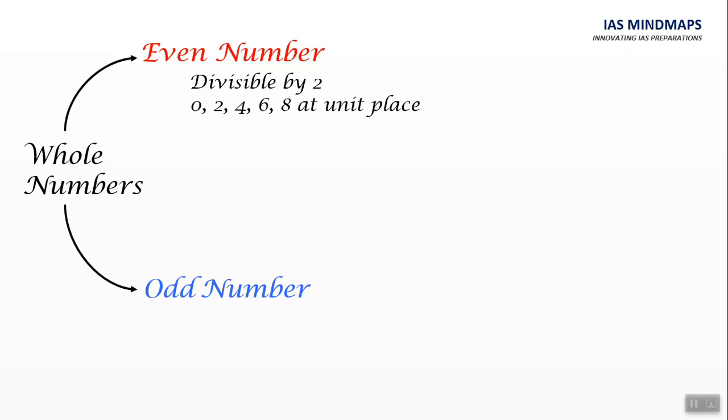And odd numbers has 1, 3, 5, 7 or 9 at its unit place.